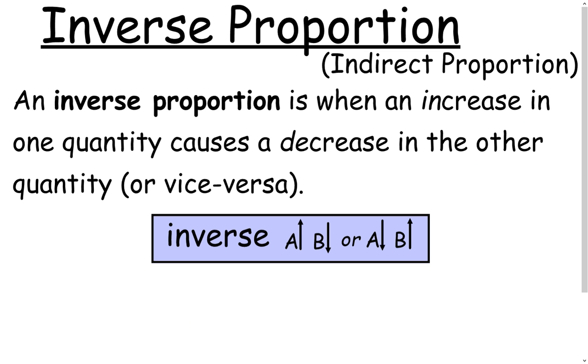An inverse proportion is sometimes called an indirect proportion. An inverse proportion is when an increase in one quantity causes a decrease in the other, or vice versa. So for example, for an inverse, if A goes up, B goes down, or if A goes down, B goes up.